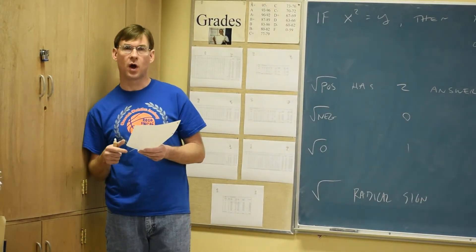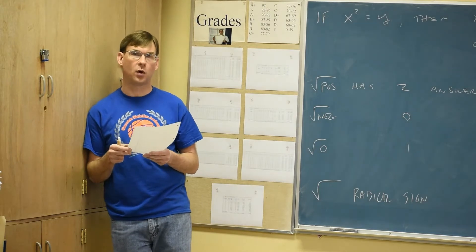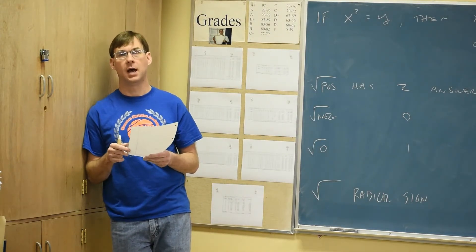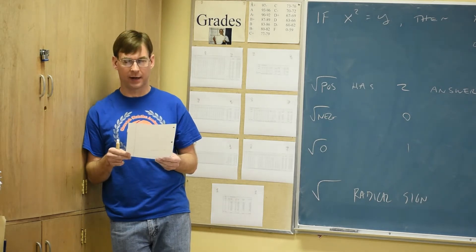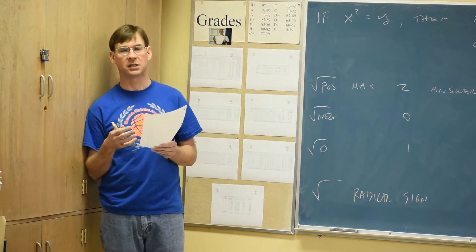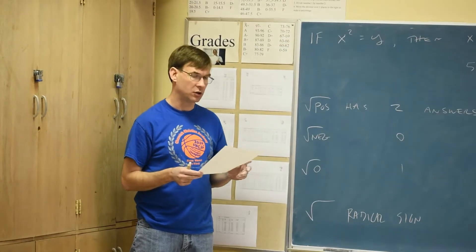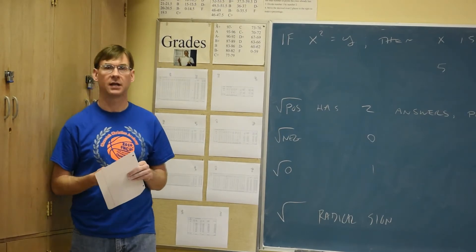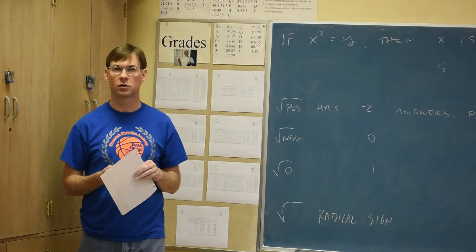Algebra 1, we're into chapter 12. We're going to do 12.1 and 12.2 because 12.2 is really, really so easy. We'll put them together in a day. Chapter 12 is the last chapter that we're really going to do. And then the final exam is coming up at the end of that. So chapter 12 is all about radicals, which is a fancy name for roots, square roots.